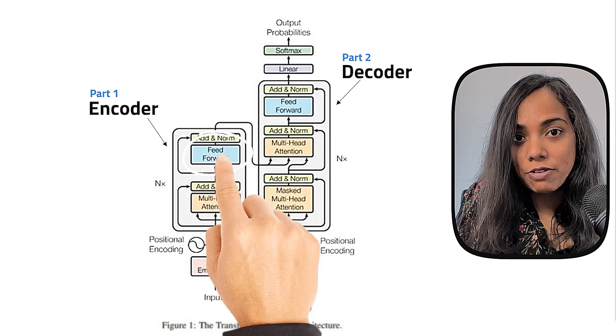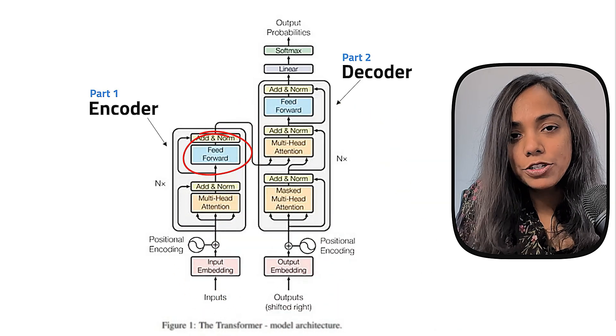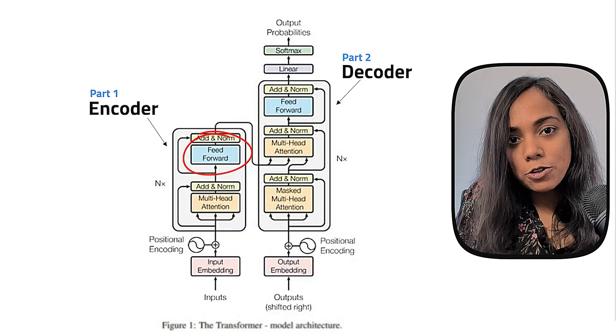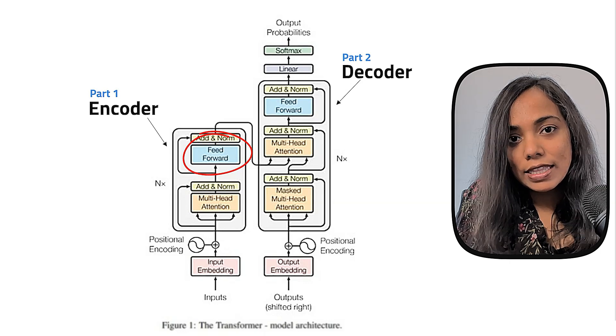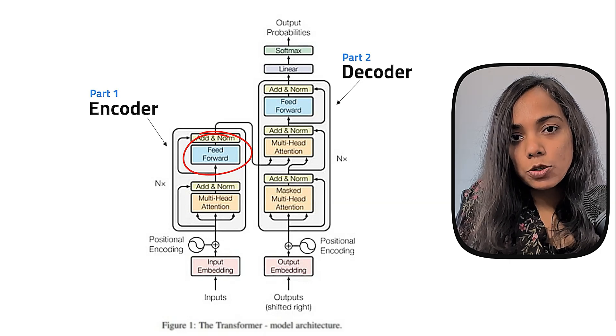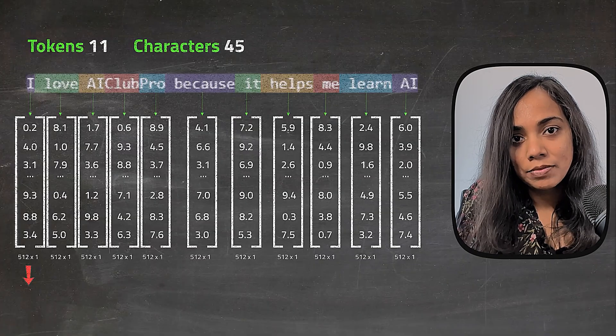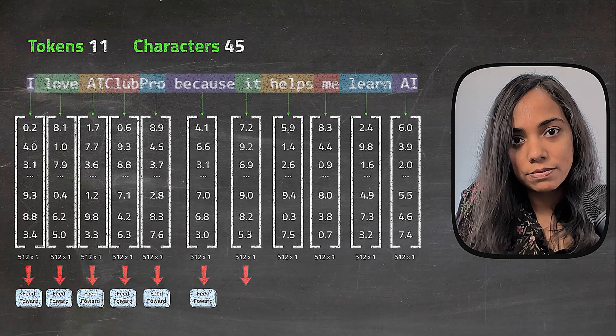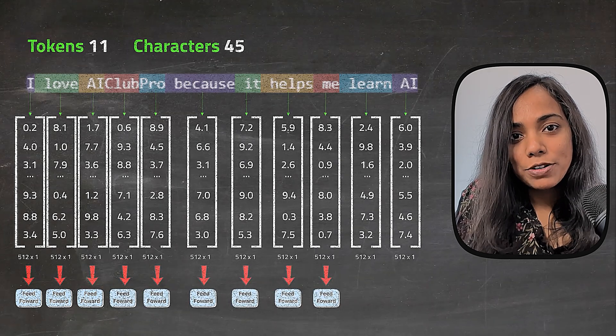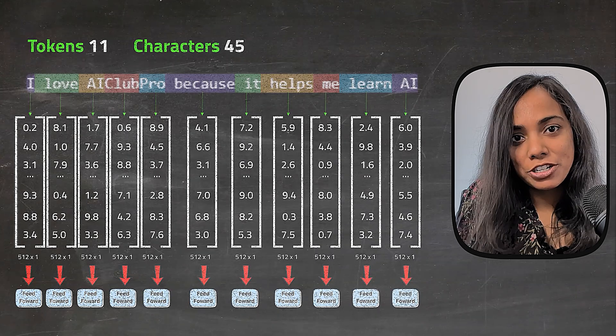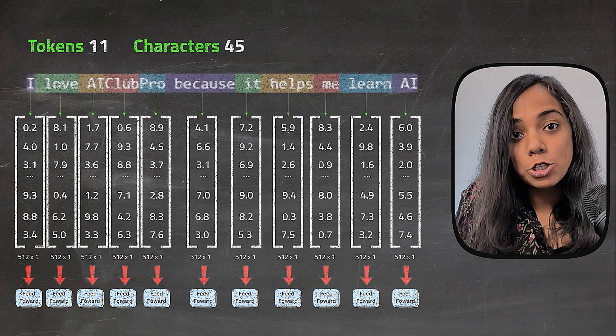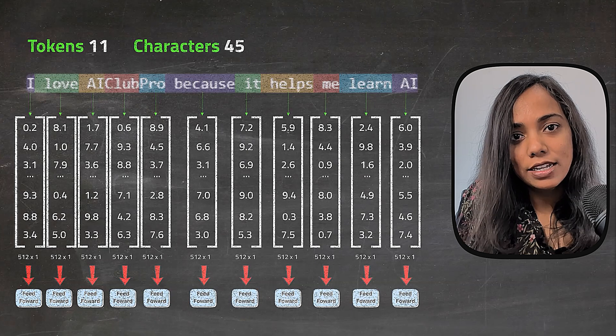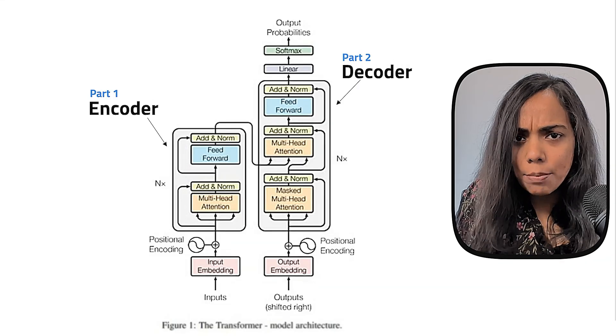Let's now talk about position-wise fully connected feed-forward neural network. Position-wise here means that it processes each word's representation independently after the attention mechanism has already figured out the relationship between different words. So this feed-forward network does some additional computation after this to process each word again independently, refining the meaning a bit further.